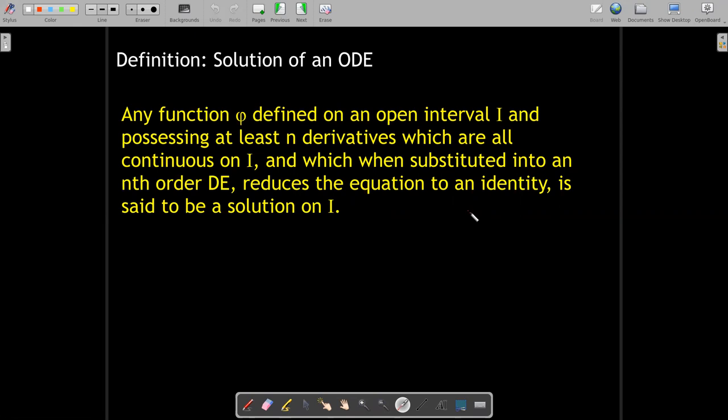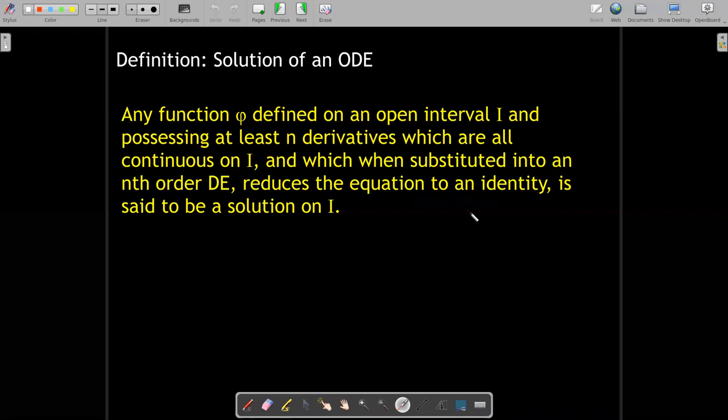Here we have an equation where the solution, instead of being a number, is actually a function. And when I take all of the needed derivatives of the function and the function itself and substitute it back into the differential equation, I should get an identity.